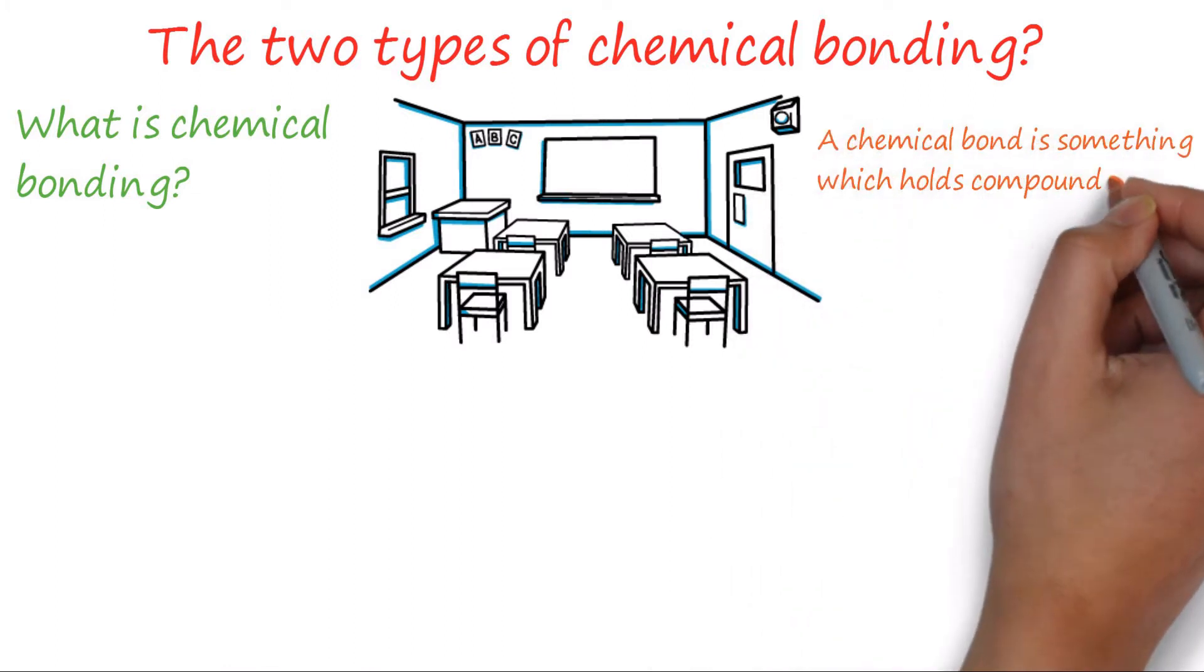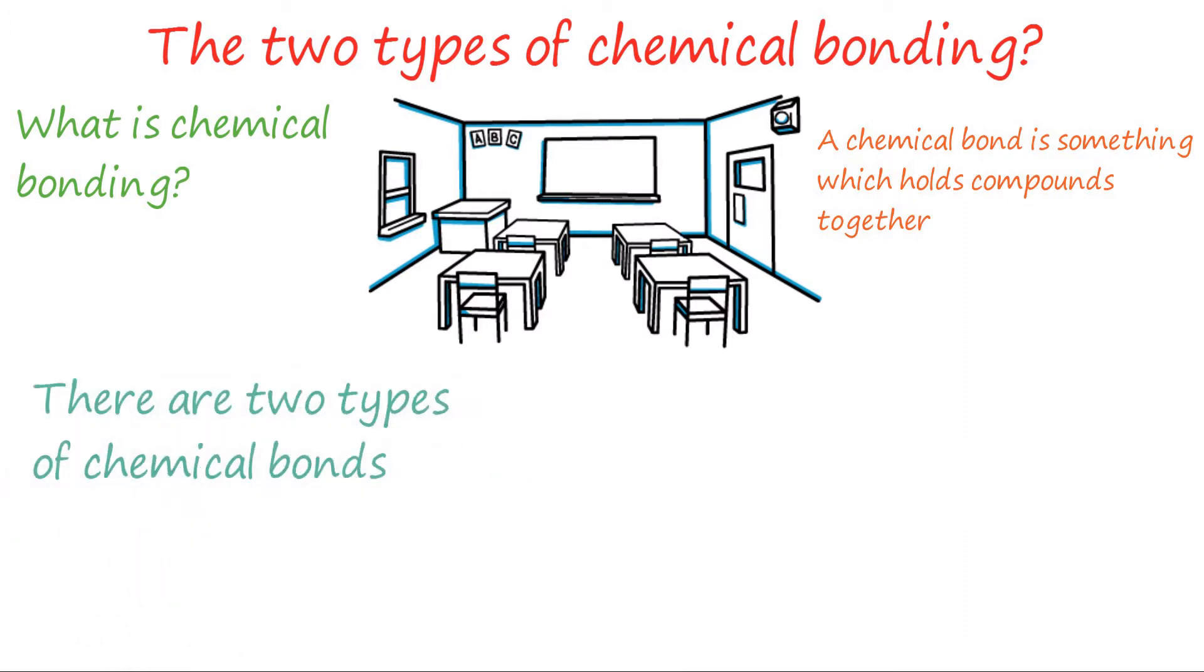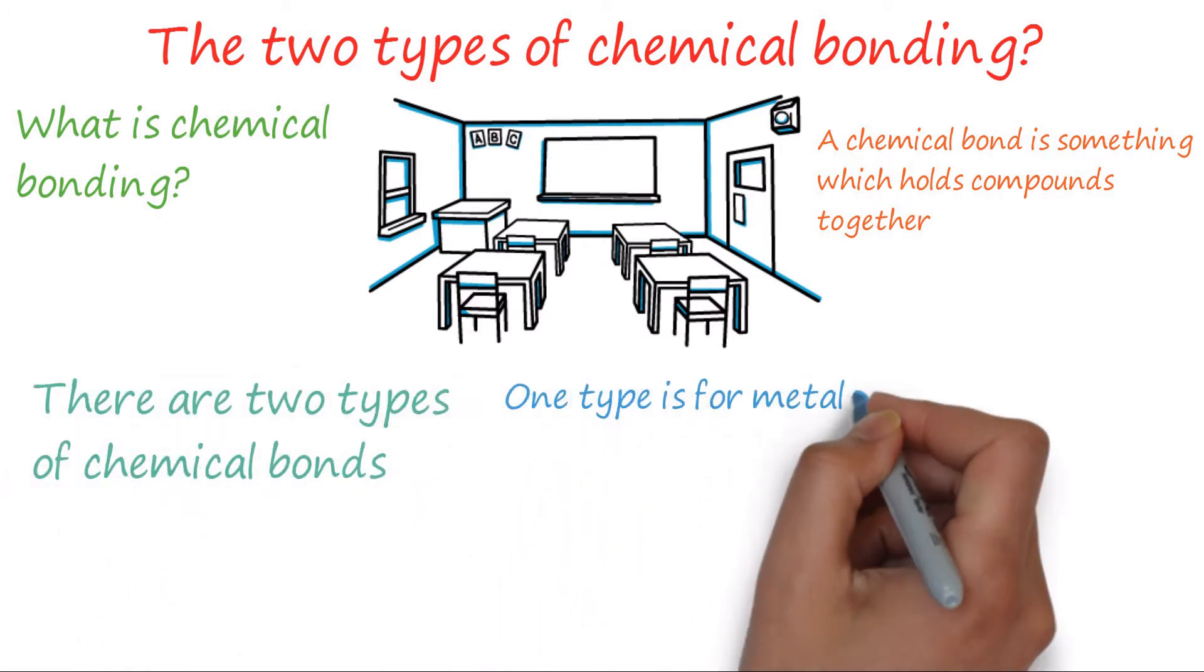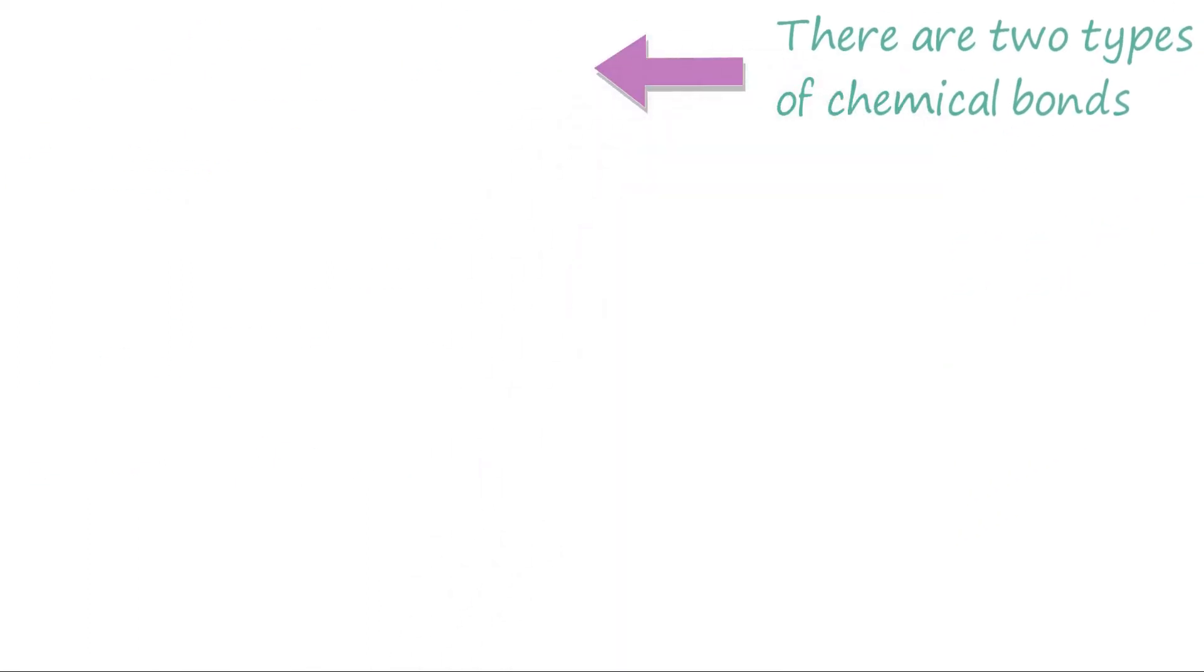You can expect an answer along the lines of: A chemical bond is something which holds compounds together. There are two types of bonds. Ionic bonding is for metals and non-metals, and covalent bonding for two non-metals.